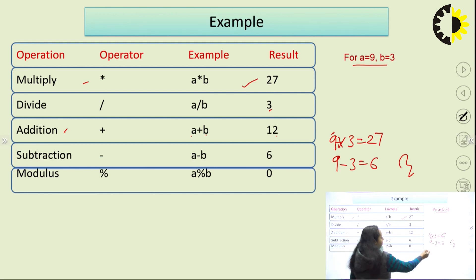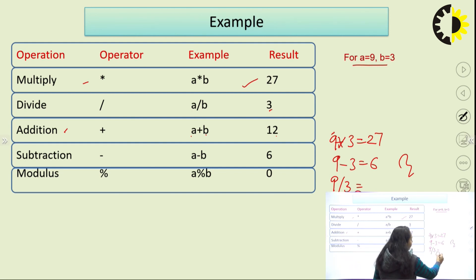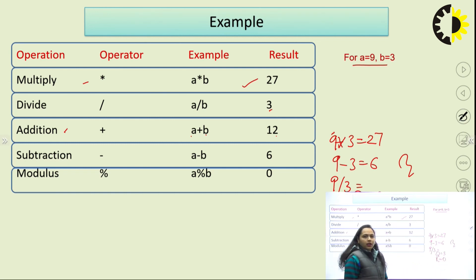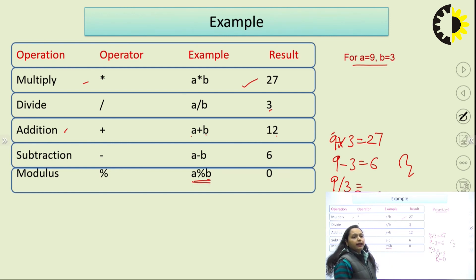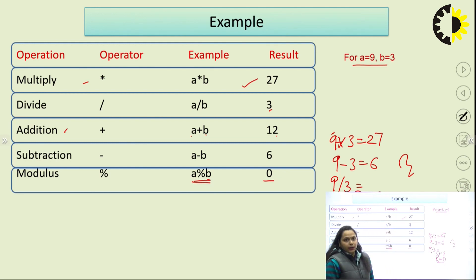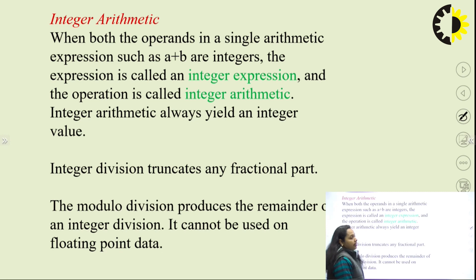For subtraction, a minus b is 9 minus 3, which equals 6. Last but not least, we have modulus: a modulus b gives the remainder. So 9 divided by 3 gives quotient 3, but the remainder is 0. So modulus will give the remainder, which here is 0, so the result is 0.